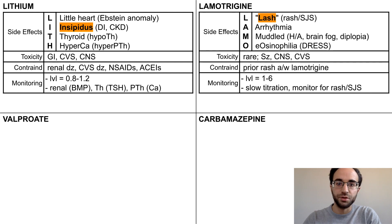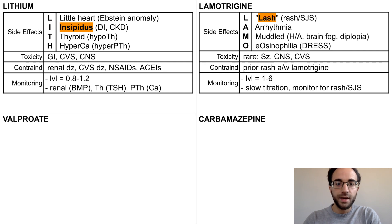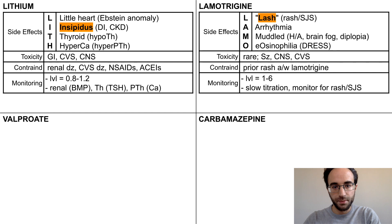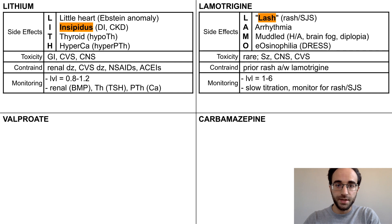Lamotrigine side effects include a rash, which rhymes with LASH, and the risk of life-threatening Stevens-Johnson syndrome, arrhythmias, CNS side effects including headache, brain fog, and diplopia, and eosinophilia, referring to the risk of DRESS syndrome. Lamotrigine has a wider therapeutic index than the other mood stabilizers, toxicity is rare, and it does not require regular monitoring, so it's a good choice for long-term mood stabilization.